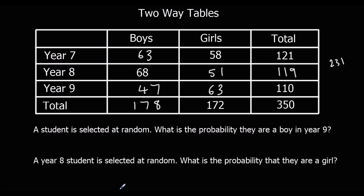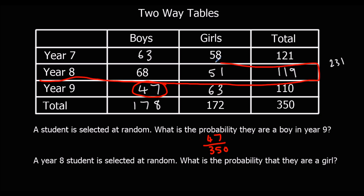A student is selected at random — what's the probability they are a boy in Year 9? Boy, Year 9 is 47, so it's 47 out of 350. A Year 8 student is selected at random — only the Year 8 row. What's the probability they are a girl? That's 51 out of 119.